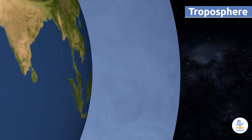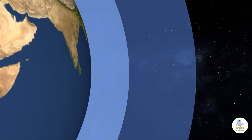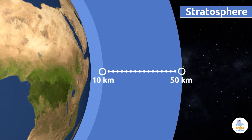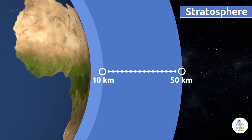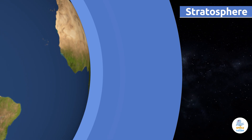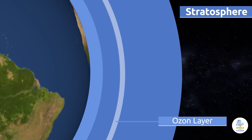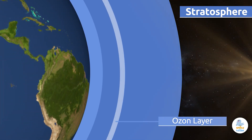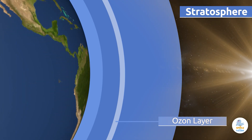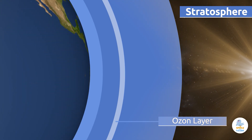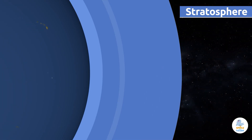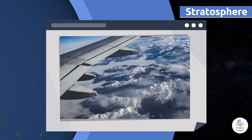The stratosphere extends to an altitude of 10 to 50 kilometers above sea level. The ozone layer is part of the stratosphere, and it's very important because it protects our planet from harmful UV sunlight rays. The ozone layer is getting thinner and thinner as air pollution rises. Did you know that airplanes fly in the stratosphere to avoid turbulence?